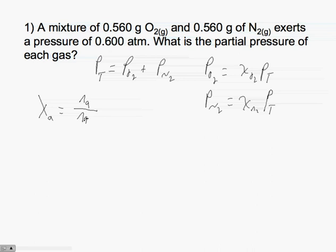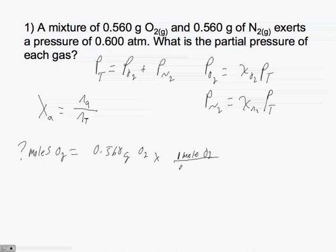The first thing you need to do is find how many moles of oxygen and nitrogen we have. How many moles of O₂ is equal to 0.560 grams of O₂? We simply use our molecular weight — for every one mole of O₂ we have 32 grams of O₂. Grams of O₂ cancel out, giving us 1.75 times 10 to the minus 2 moles of oxygen.